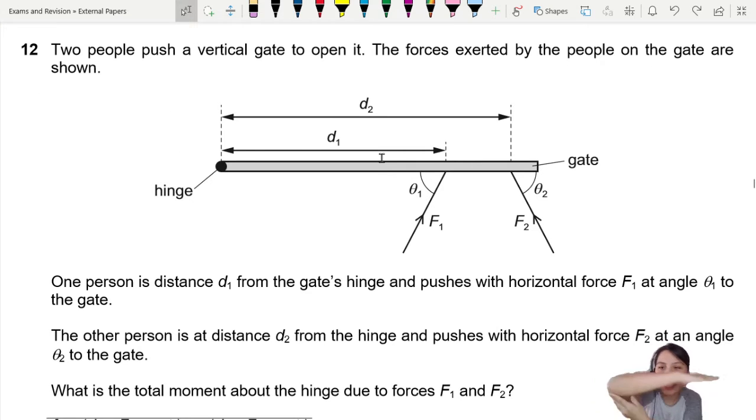So your gate is gonna open this way. You have two forces at an angle. One person is a little bit closer, D1, so this is force number one pushing this way, and there's a second person D2, a little bit further, also pushing at a different angle.